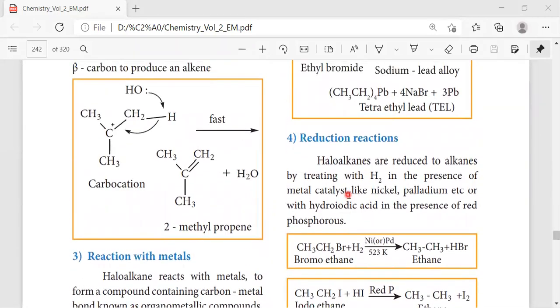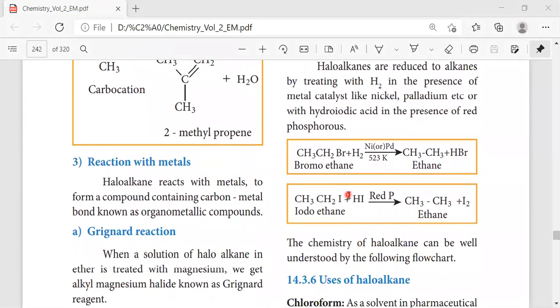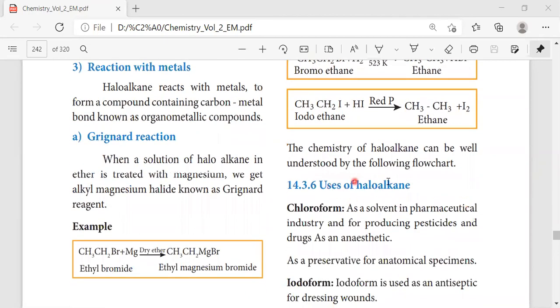Now comes reduction reaction. In reduction reaction, the haloalkane reacts with hydrogen in the presence of nickel palladium catalyst at a temperature of 523 Kelvin, so that we get the product as ethane. This takes place with the treatment with hydrogen iodide which is alkyl along with the halogen group. With the presence of red phosphorus, we get the product as alkane with the elimination of iodine.